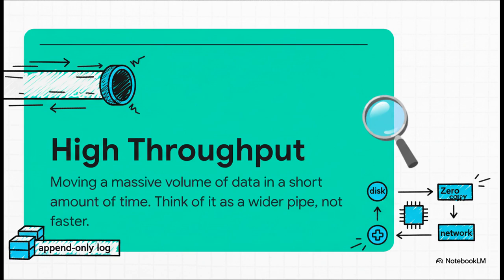Okay, first things first. When we say Kafka is fast, we need to be really specific about what that means. We're not talking about low latency for a single tiny message. We're talking about high throughput, the ability to just shovel a massive volume of data from one place to another. The best way to picture it? Think of a giant water pipe. The goal isn't to make the water itself speed up, it's to make the pipe so wide that you can move a whole swimming pool's worth of water all at once. That's throughput.